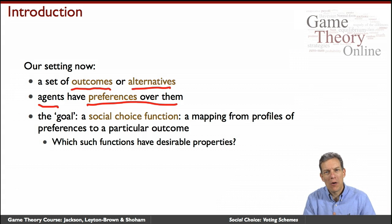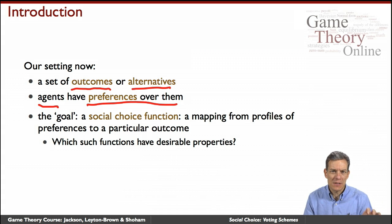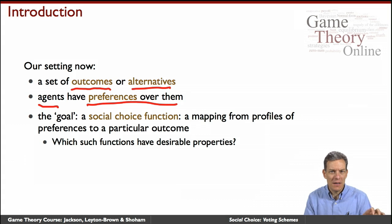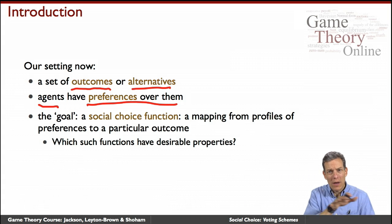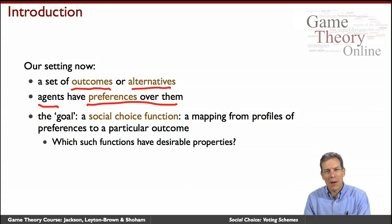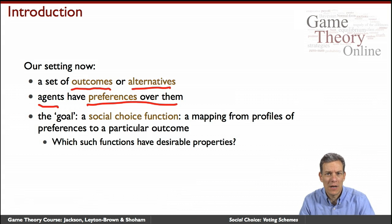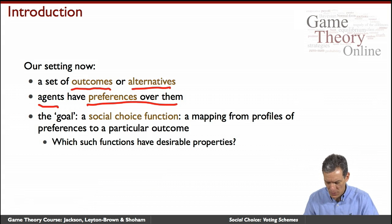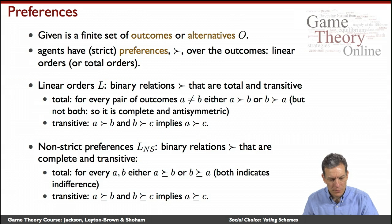For now, we're just going to look at the function itself and say, okay, there are a set of ways in which these things can be mapped. Later we'll ask which ones can actually be achieved or how they can be achieved.